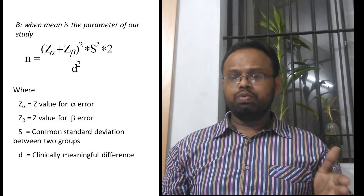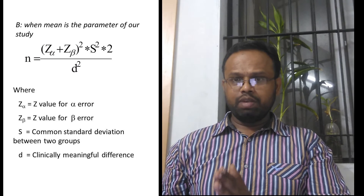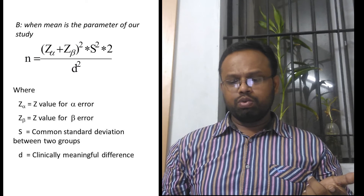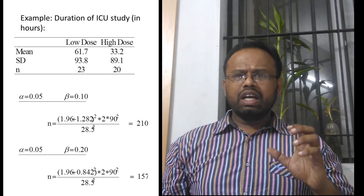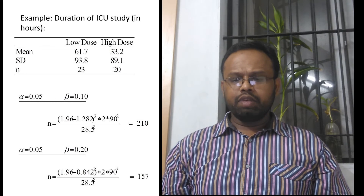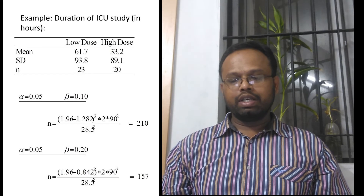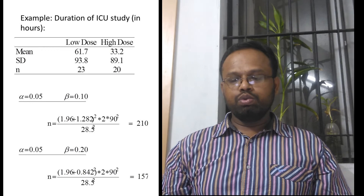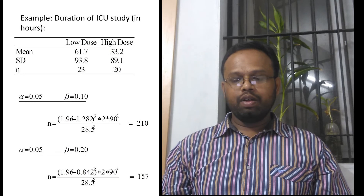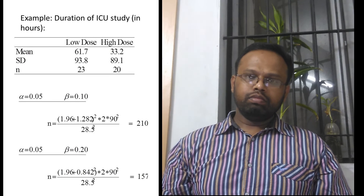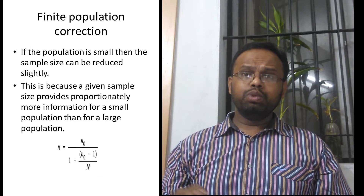When means are what you want to compare between groups, the pq in the formula is replaced with s², where s is the common standard deviation — the average between the two groups. For example, with a 10% beta error you end up with a sample size of 210, and with a 20% beta error your sample size reduces to 157. That means when you increase your beta error, your sample size reduces — that is, the power of your study decreases.